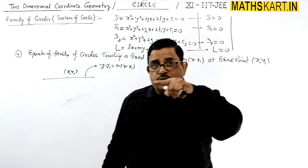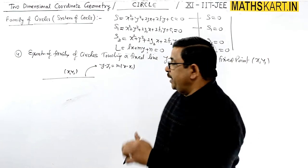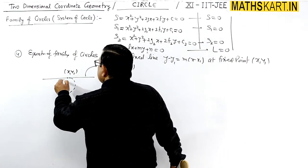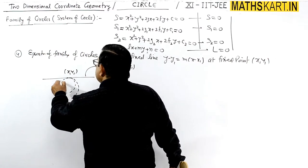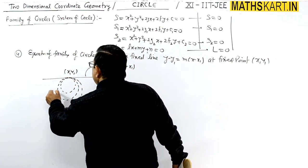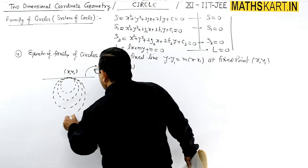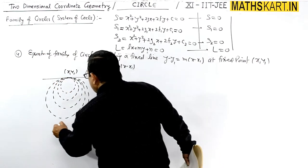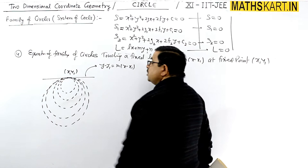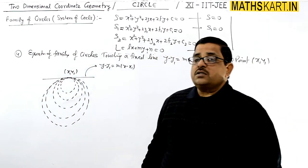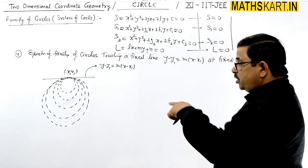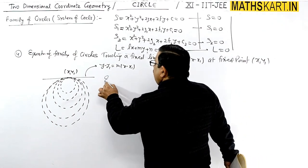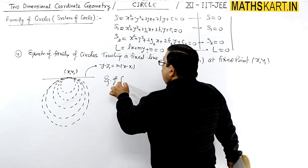So for this particular line, touching at the point x1, y1, there can be many circles. There can be many circles touching the given line at the fixed point. You can draw many circles passing through the same point — so many such circles are possible.